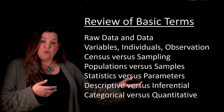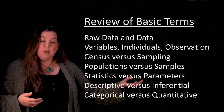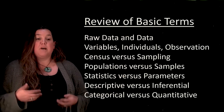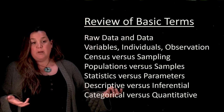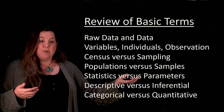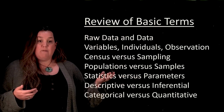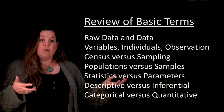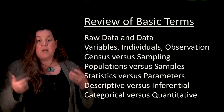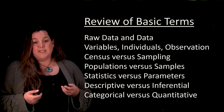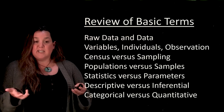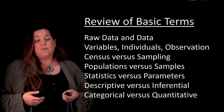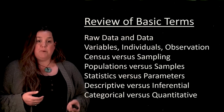Taking a census is difficult, so usually you take a sample. The way you get a sample is by using some sampling method. A sample is a subset of that larger population. If you collect data on those two groups, you've either taken a census to get the entire population or used some sampling method to get a sample.